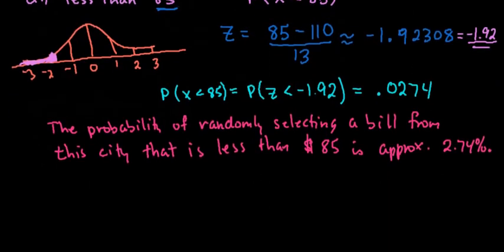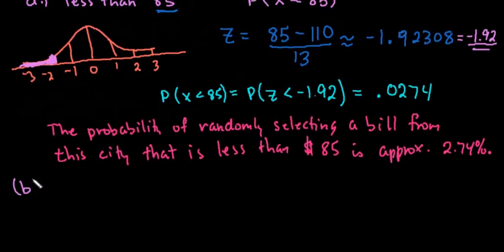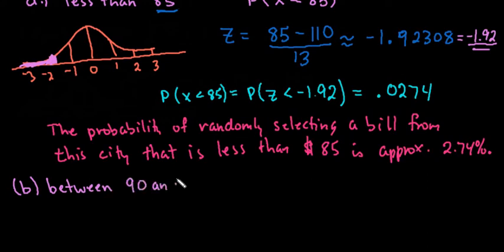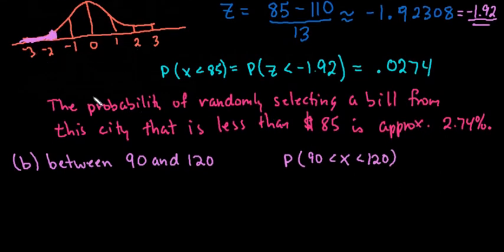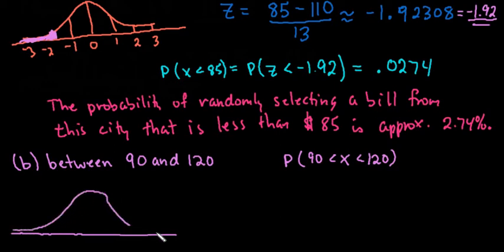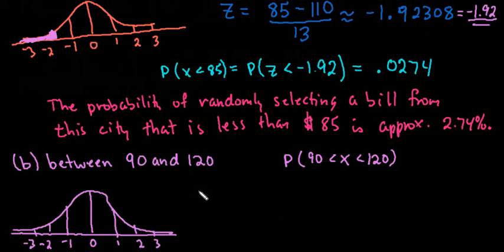For the next one, we want to find the probability that the bill is between two values, which requires much more work with hand calculations. We are looking for the probability that x is greater than 90 but less than 120. What we must first do is convert both values to z-scores. Drawing out our normal curve with 0, 1, 2, 3 and negative 1, negative 2, negative 3 standard deviations, we need to calculate the z-score for both values.